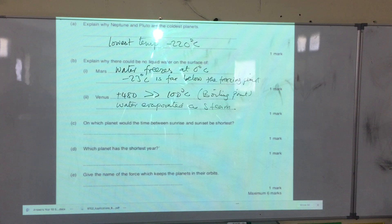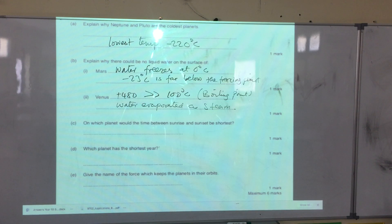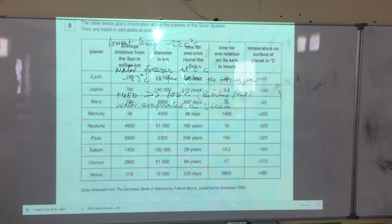On which planet would the time between sunrise and sunset be shortest? Now we need to go back to the time for one orbit.